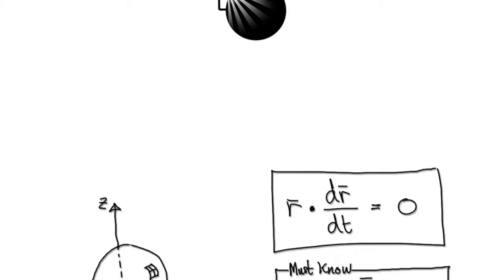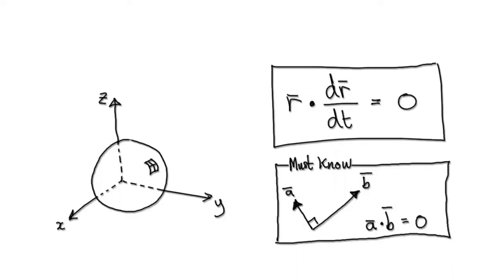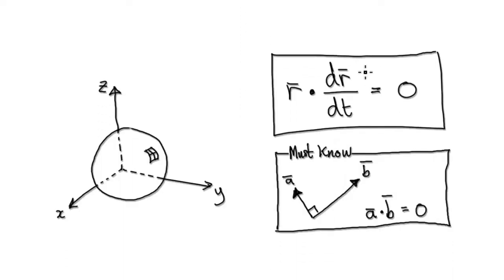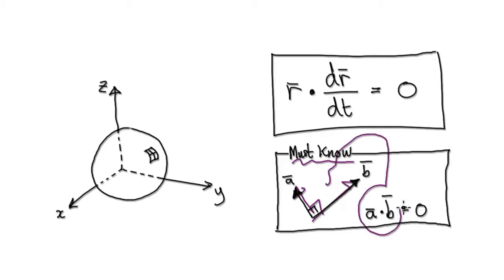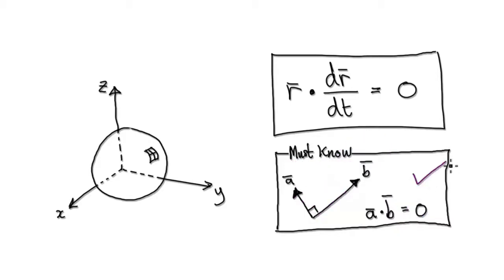In this video I'm going to try and convince you why this is always true. In order for me to do that, I require that you must know that if you have two vectors and they're at 90 degrees to each other, then the dot product of the two must equal zero. I require you to already know this.